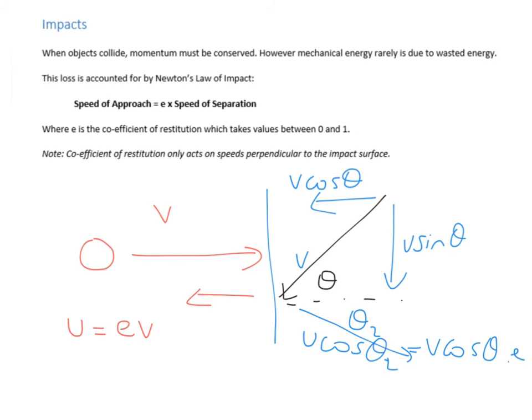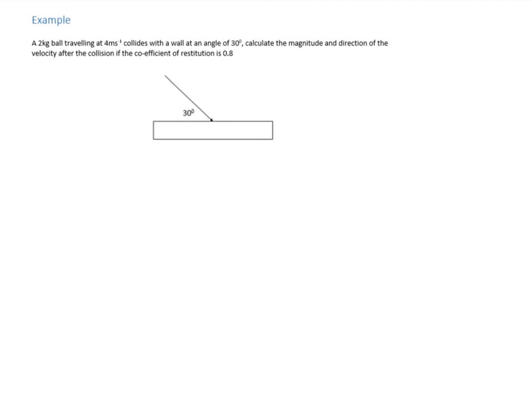So, let's see that used in an example. So, we've got a ball travelling at 4 meters per second, and it collides with a wall at an angle of 30 degrees.